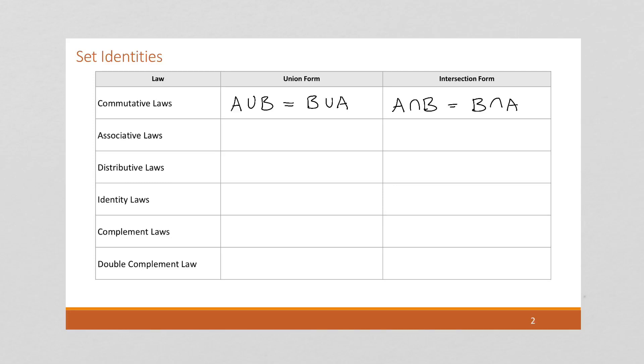The associative laws allow us to move parentheses around. So if we have A union B in parentheses, union C, now notice they're all unions, there's no change. We can move these parentheses around and have A union B union C.